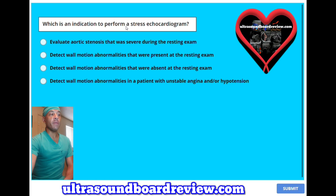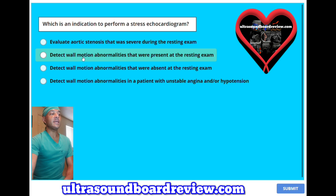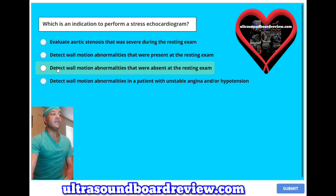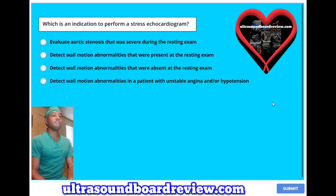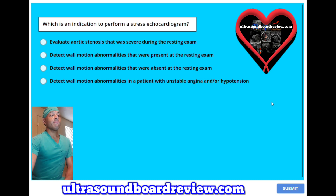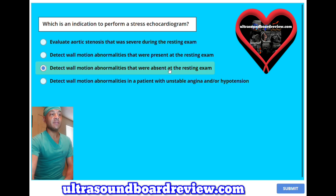Which is an indication to perform a stress echocardiogram? A, evaluate aortic stenosis that was severe during the resting exam; B, detect wall motion abnormalities that were present at the resting exam; C, detect wall motion abnormalities that were absent at the resting exam; or D, detect wall motion abnormalities in a patient with unstable angina and/or hypotension? The answer is C, detect wall motion abnormalities that were absent at the resting exam.